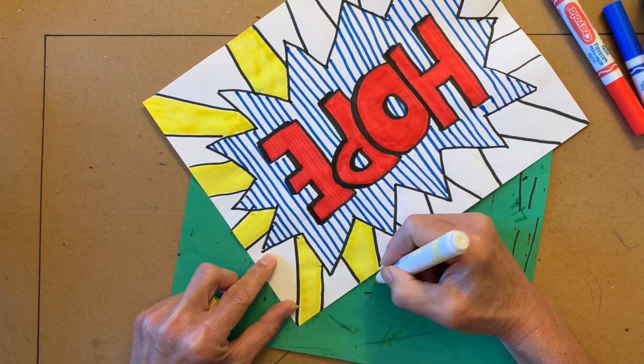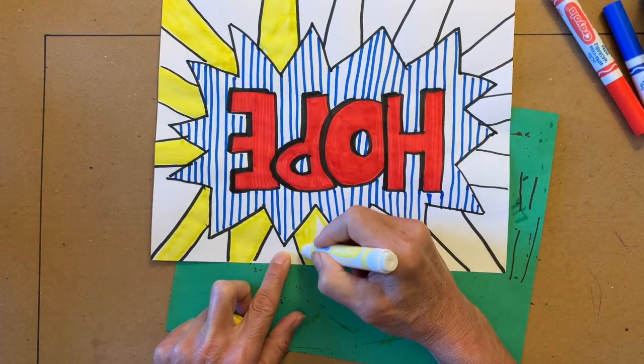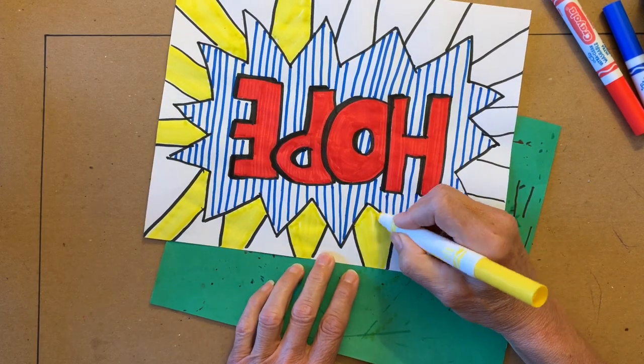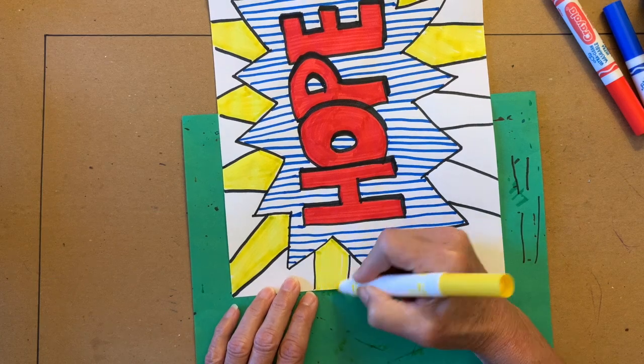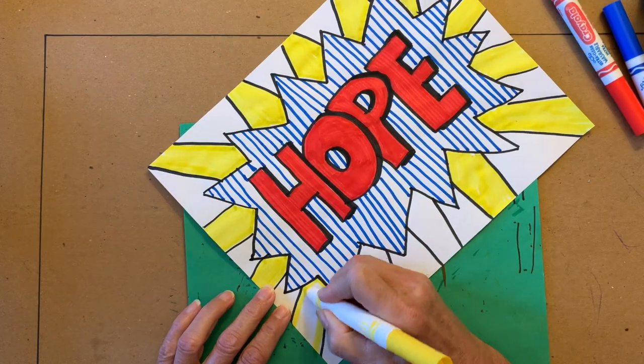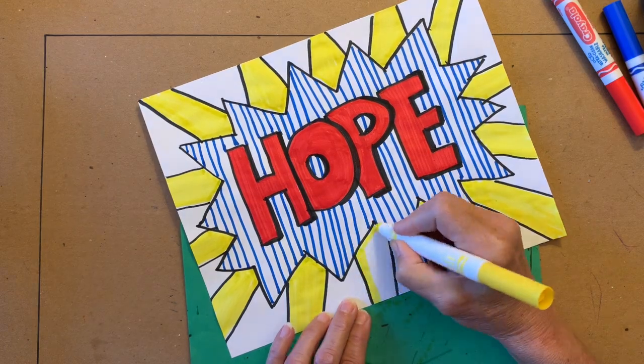Then I created solid areas of yellow. In a few spots the black water-based marker lines bled into the yellow areas. If you are using a water-based black marker I would suggest waiting to use it until you have added all your other colors.